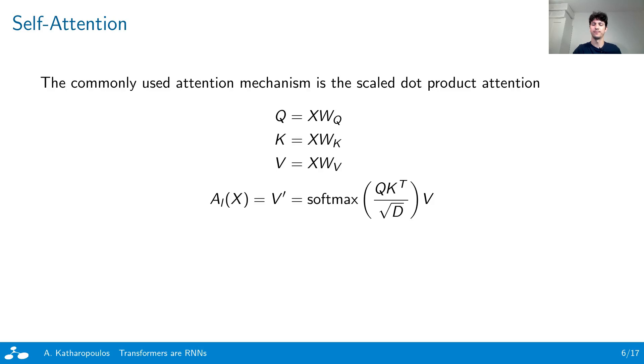The i-th output of the attention function is the weighted average of all the values, weighted by the normalized similarity of the i-th query with each of the keys. The similarity measure commonly used is the exponential of the dot product. As a result, computing the output requires multiplying every query with all the keys, resulting in the quadratic complexity of the attention computation.